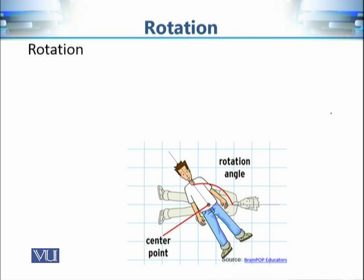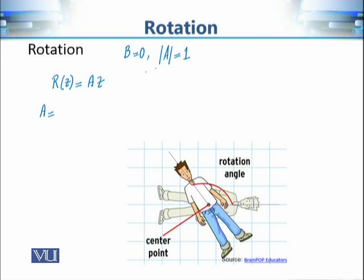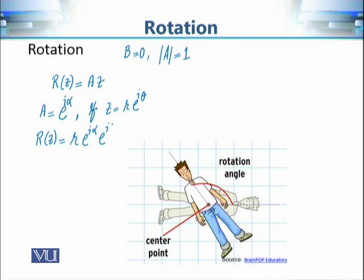The next particular case of linear transformation is rotation. In the case of rotation, we take b = 0 and choose the complex number a such that its modulus is equal to 1. The linear transformation becomes R(z) = az. Using polar coordinates, since |a| = 1, we write a = e^(iα) where α is the argument, and z = r·e^(iθ). Then R(z) = r·e^(iα)·e^(iθ) = r·e^(i(α+θ)).